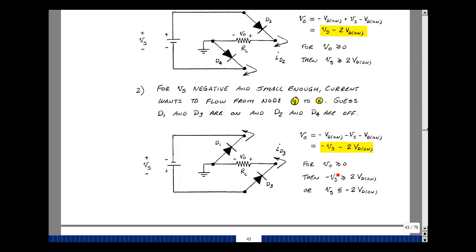For current to flow, it means that the output voltage is greater than or equal to 0. That implies that minus Vs is greater than or equal to 2 Vd on. Multiply through by a minus sign, that flips the inequality, and Vs needs to be less than or equal to minus 2 Vd on. In other words, it needs to be negative enough for this to happen.